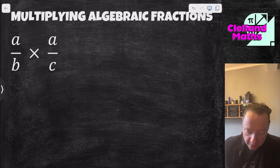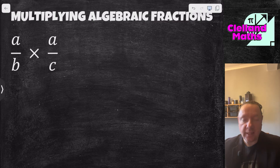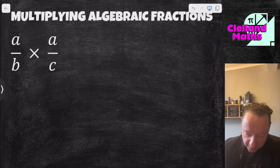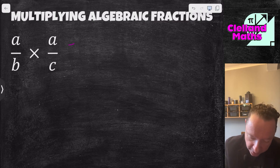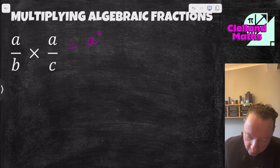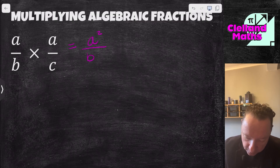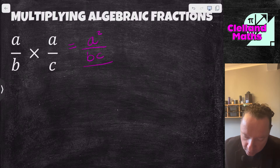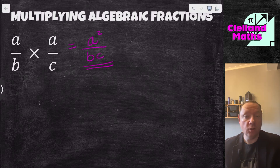Let's start off straight away with A over B times A over C. That is A times A on the top, which is A squared, all over B times C which is just BC, and there's no simplification required. So there's a quick first example.